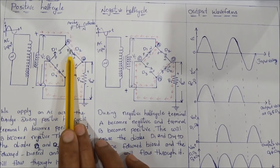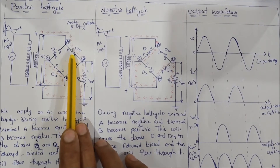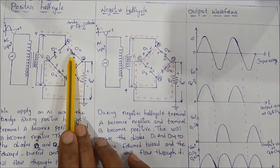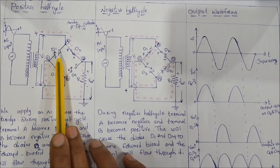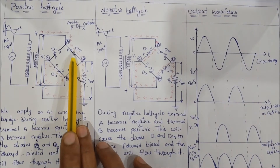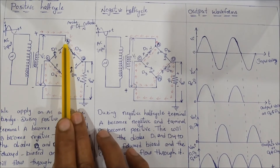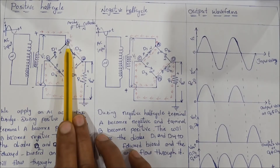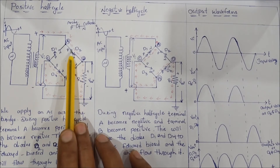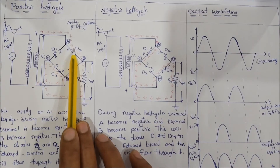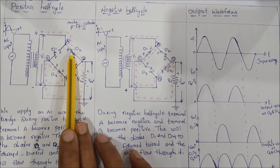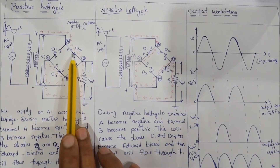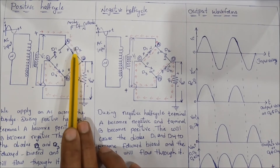The anode of D2 is connected to terminal A, which is positive. So it moves positive and turns on, represented as a closed switch. Diode D1 is reverse biased because A is positive connected to its cathode. Diode D2 is forward biased because A is positive and connected to its anode terminal, so it is a closed switch.